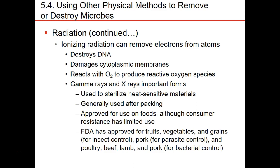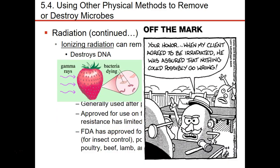When we use gamma irradiation on fruits and vegetables, it can keep them from spoiling for a longer period. Irradiation using gamma rays kills off the bacteria and fungus that cause food to spoil. And here's a joke: 'Your Honor, when my client agreed to be irradiated, he was assured that nothing could possibly go wrong' — illustrated by Mr. Potato Head with eyes and hands in different spots.